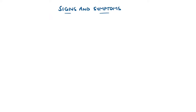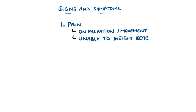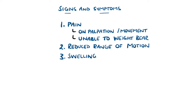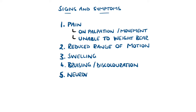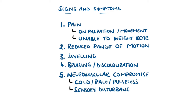Pain is the most common symptom, which may also be present or worsened during movement, and there is generally an inability to bear weight and walk. Linked to this, there can also be a reduced range of motion. There is often swelling and bruising around the ankle, and there may be an obvious deformity in displaced fractures. Neurovascular compromise needs to be considered, which could be indicated by a cold, pale, pulseless foot as well as motor or sensory disturbances, and this should be assessed before and after any treatment.